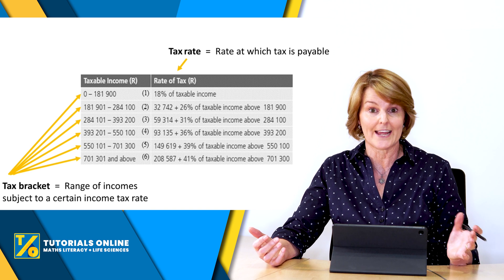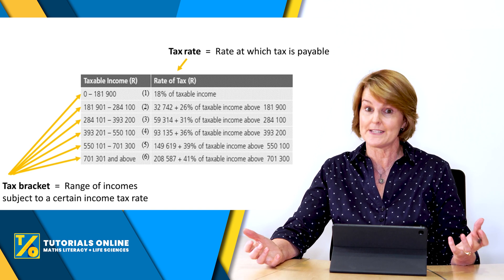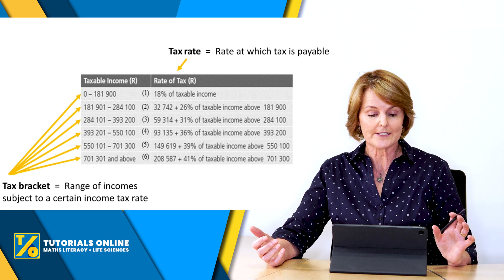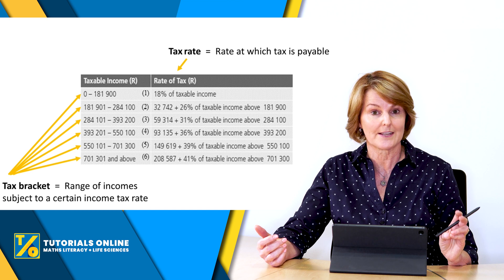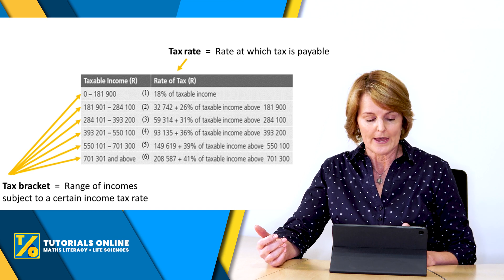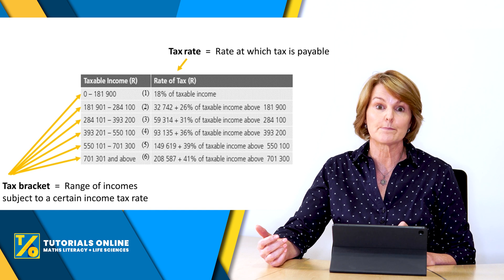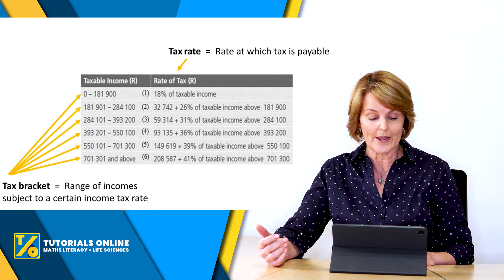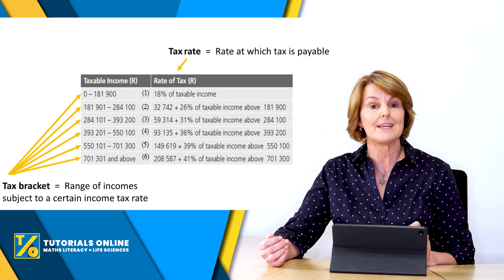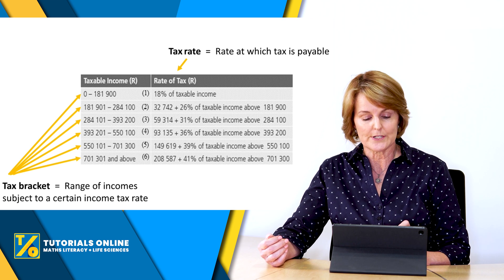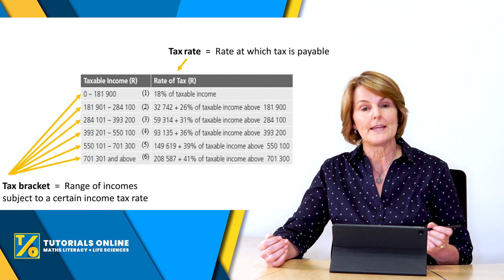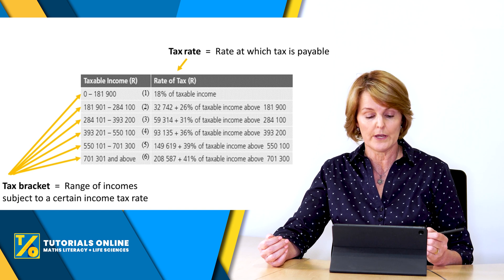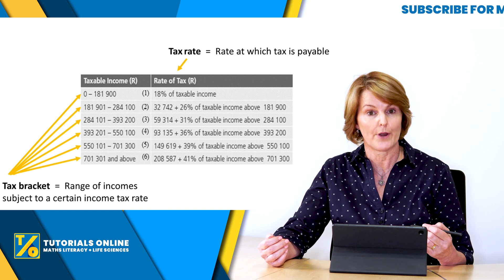If we look over here on the screen, I think you're all familiar with a tax table. A tax table tells you two things, and there are two terms you need to know relating to a tax table. The one is a tax bracket — it's a range of incomes subject to a certain income tax rate. You can see each arrow is pointing to a different line, and each line is a tax bracket. So depending on what you earn, you will fall into one of those tax brackets.